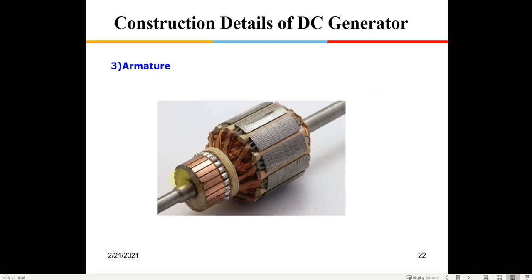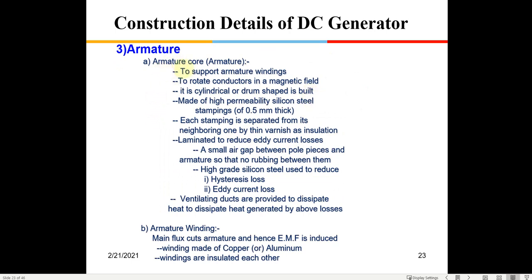The armature supports the armature windings and rotates the conductors in the magnetic field. It is cylindrical or drum-shaped and made of high-permeability material. Each stamping is insulated from the next by varnish. The core is laminated to reduce eddy currents and hysteresis loss. Ventilating ducts are provided to dissipate heat.